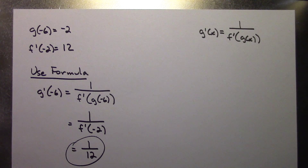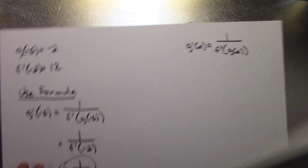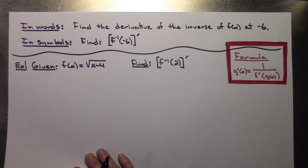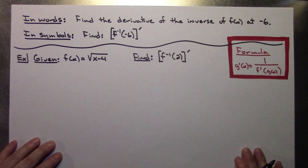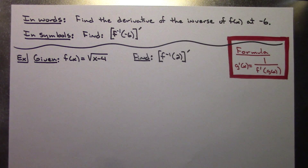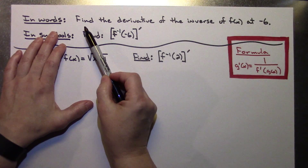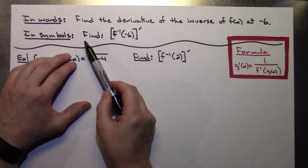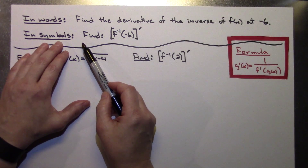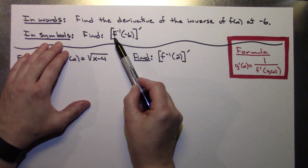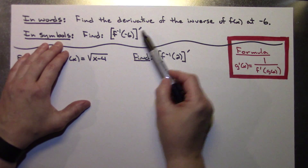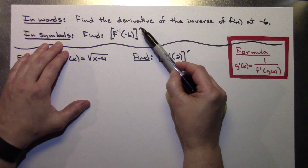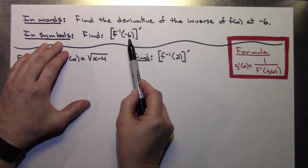Let's go through another example — hopefully I can get it all on one page to clean it up. Before I do, I want to clarify that they can write the question out in words or in symbols. In words they might say: find the derivative of the inverse of f of x at negative 6. In symbols they might write it using the inverse function notation at negative 6. It's the exact same thing.